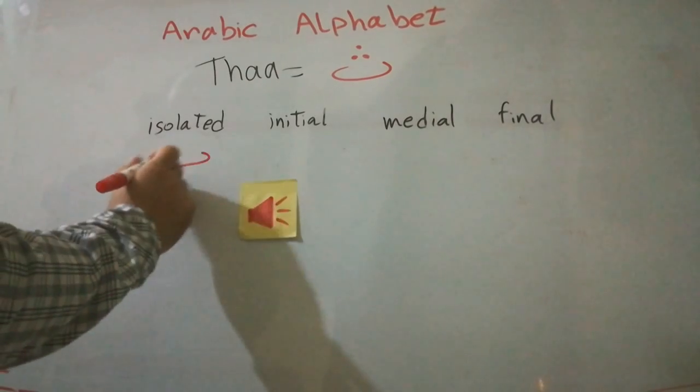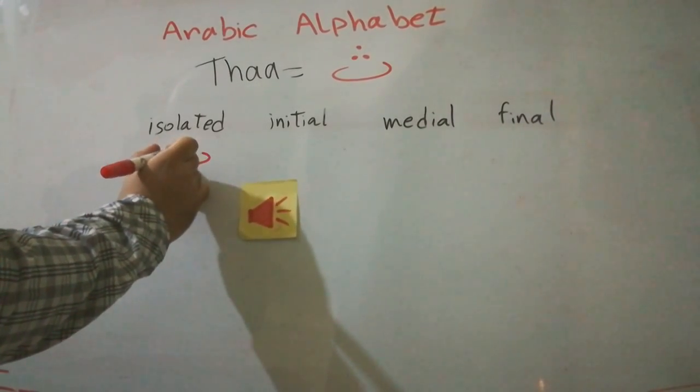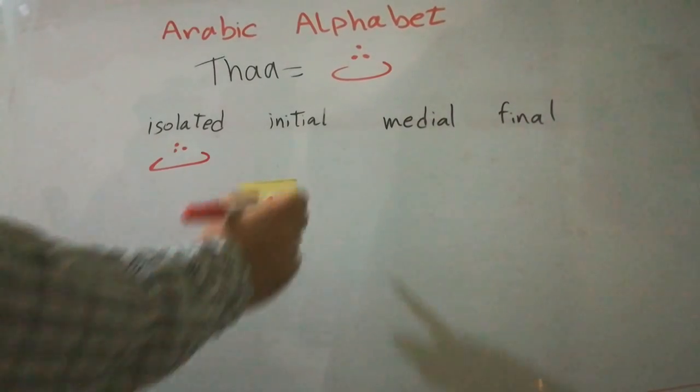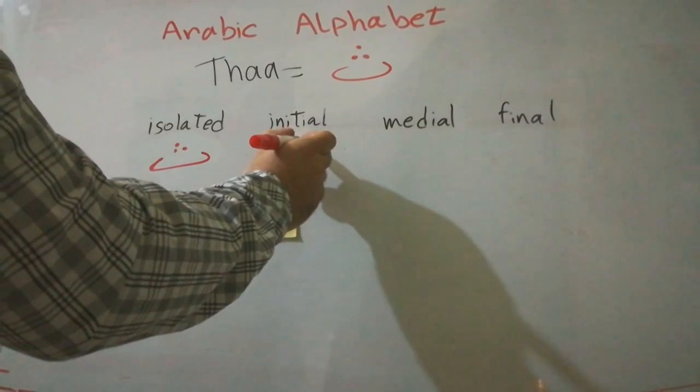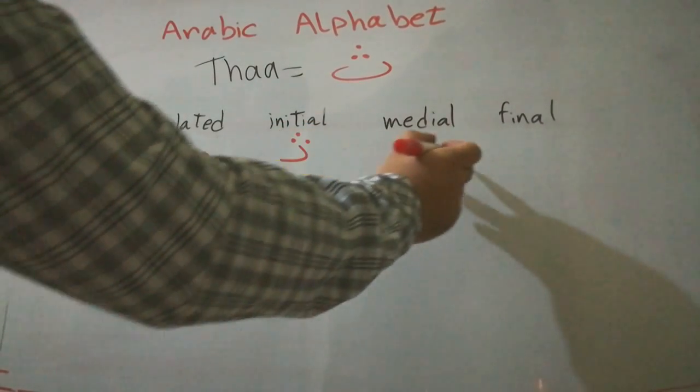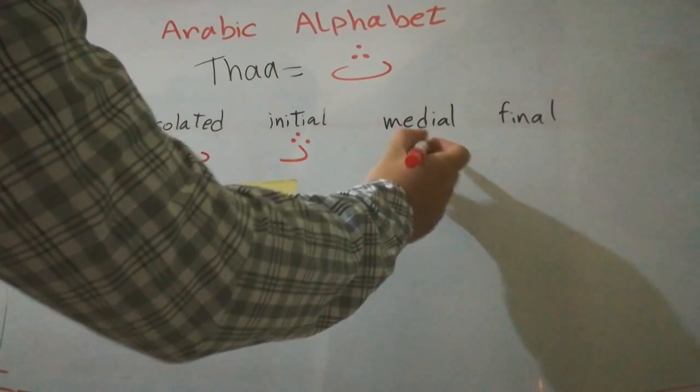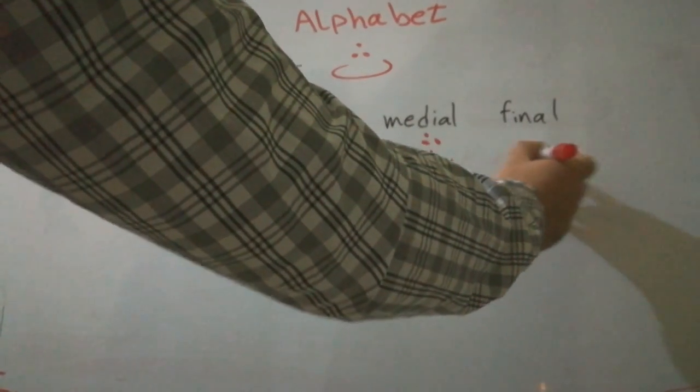Four forms for typing. The isolated is THA, this shape. Initial is this shape. Medial is this one. The final is this one.